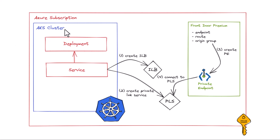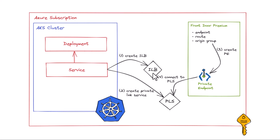We're going to have an AKS cluster with a regular deployment and a service. The service makes our application available to the outside world. We could already in the past tell AKS to create an internal load balancer, which results in a load balancer created in the node resource group of your AKS cluster. That gives you a private IP address to reach the service in Kubernetes.